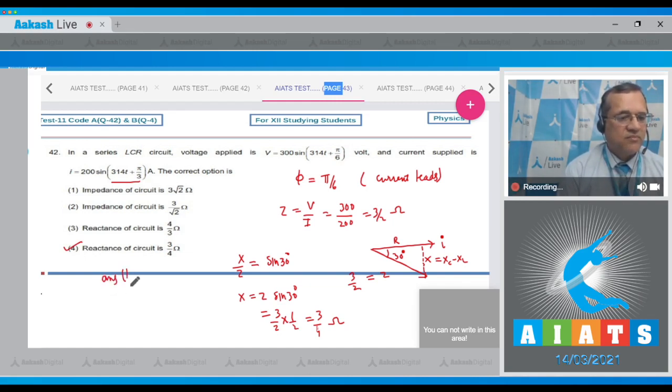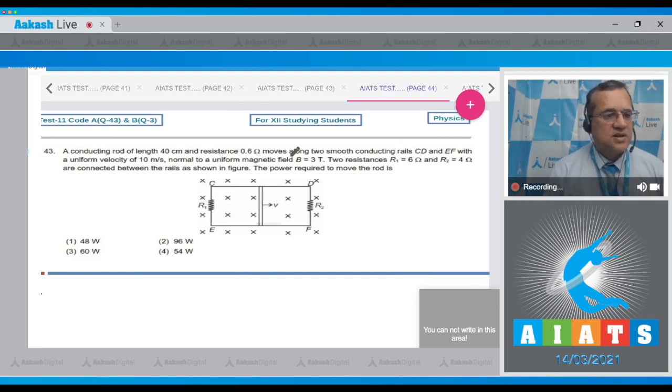Question 43: A conducting rod of length 40 cm and resistance 0.6 ohms moves along two smooth conducting rails with velocity 10 m/s, normal to a uniform magnetic field of 3 tesla. Two resistances R₁ = 6 ohms and R₂ = 4 ohms are connected between the rails. Find the power required to move the rod. When you move the rod, there's a magnetic force in the opposite direction, so the power required equals